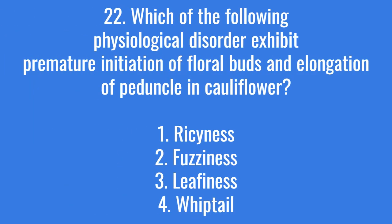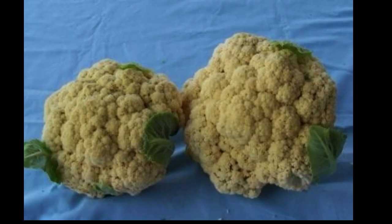Which of the following physiological disorders exhibits premature initiation of floral buds and elongation of the peduncle in cauliflower? The right answer is option 1: riciness. In riciness, curds become loose and velvety in appearance, with elongation of pedicels and formation of small white flower buds at the curding stage.